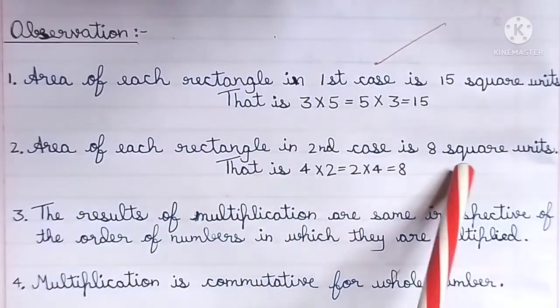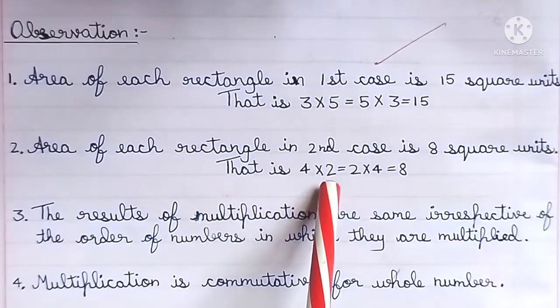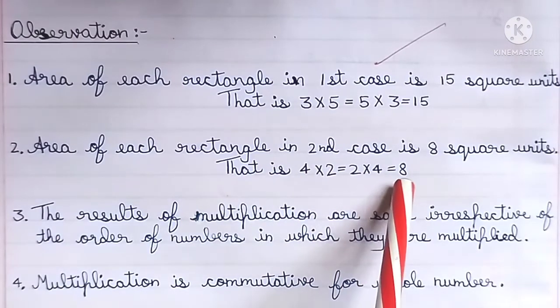Area of each rectangle in the second case is 8 square units. That is, 4 × 2 = 2 × 4 = 8.